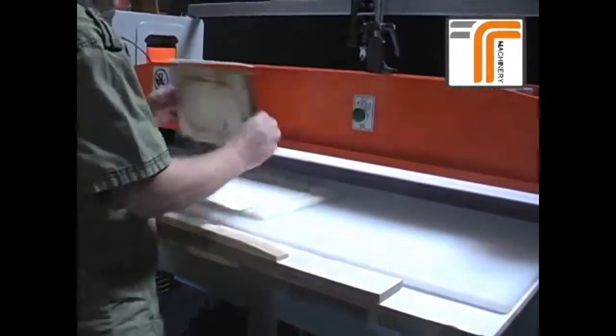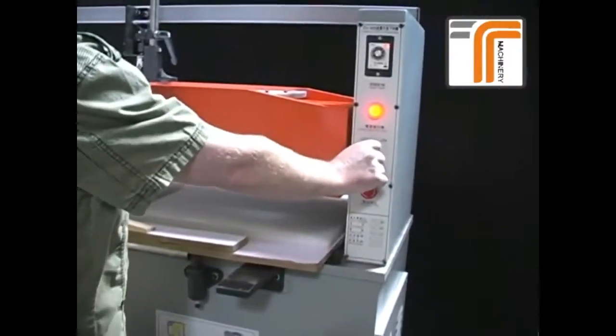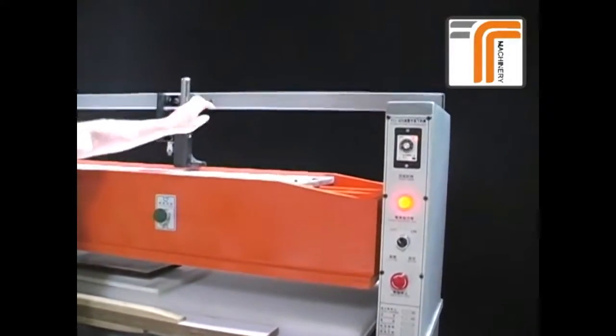So I've positioned my die on top of the material that I want to cut. Slide this in. And you want to make sure, right here, this is loose.